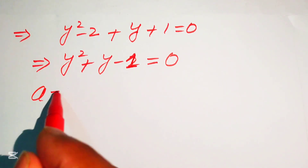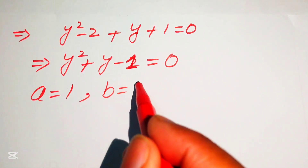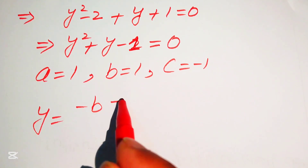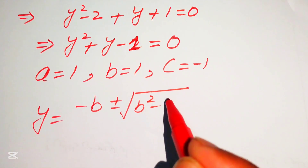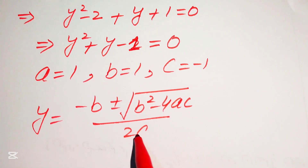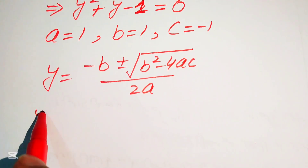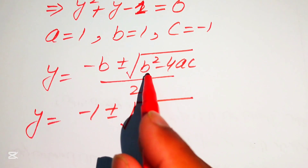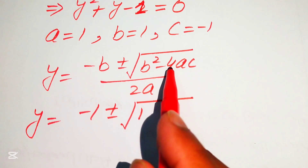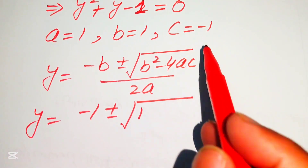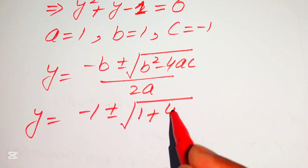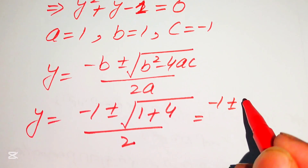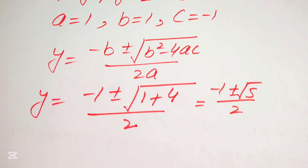The coefficients of this quadratic are a equals 1, b equals 1, and c equals minus 1. Applying the quadratic formula, minus b plus or minus square root of b squared minus 4ac divided by 2a, and substituting: minus 1 plus or minus square root of 1 plus 4, divided by 2, giving minus 1 plus or minus square root of 5 divided by 2.